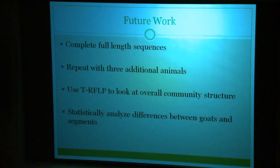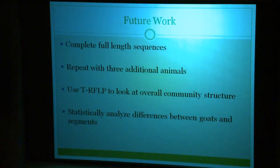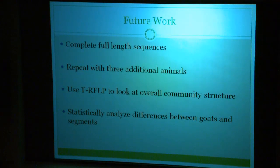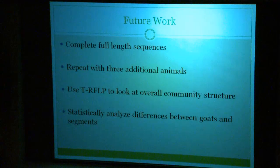So what's next for this project? My next step is to complete the full-length sequences of the two goats that I've already done partial-length sequences for, and then complete the entire process with the three additional animals that I was not able to get to. Fortunately, I have more than ten weeks to do that in this upcoming semester. We'll then also use terminal restriction fragment length polymorphism to look at the overall community structure, and use that data to statistically analyze differences between goats and segments.